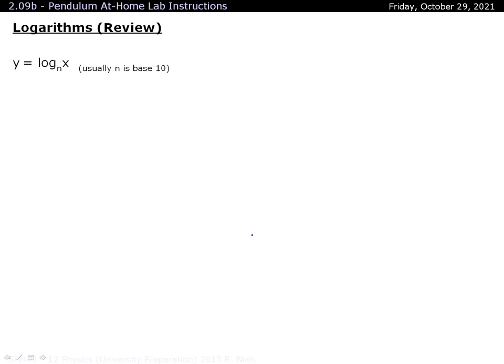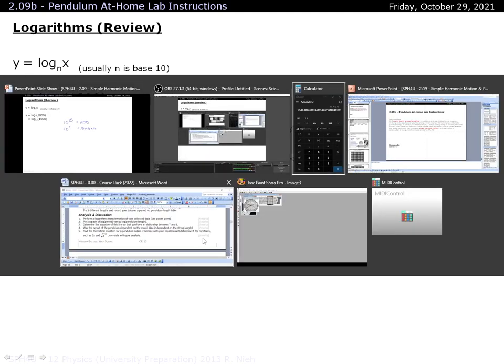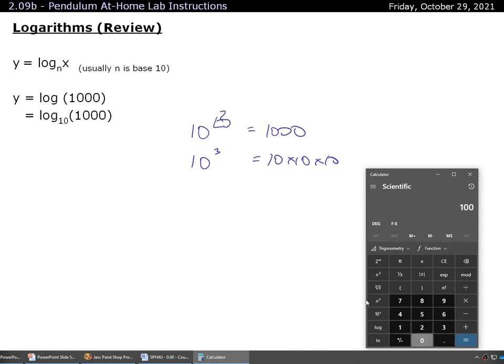As a reminder, what a logarithm is, is that it's a method of trying to find out the exponent that will get you to your answer. For example, if you do the log of 1000, effectively you're trying to ask, well, 10 to the power of what will give you 1000. Now with logarithms, often you assume that's a base 10, but you can also assume other bases as well. But on your calculator, 10 is the default number. So 10 to the power of what will give you 1000.